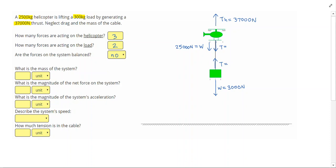So in this problem, each object has a missing force, that tension. So I can't just look at the helicopter, I can't just look at the box. So this time, I'm going to look at the entire system.